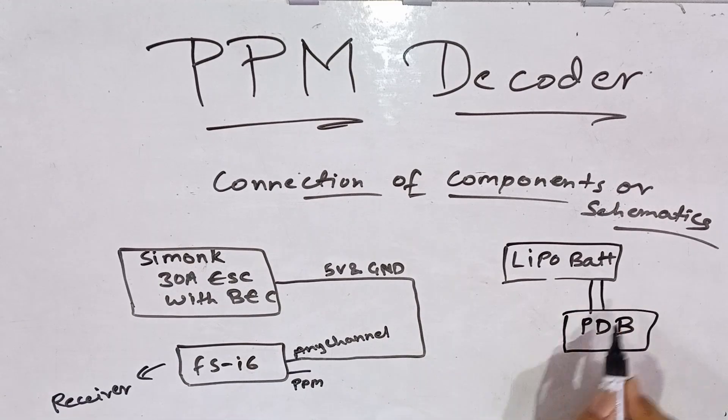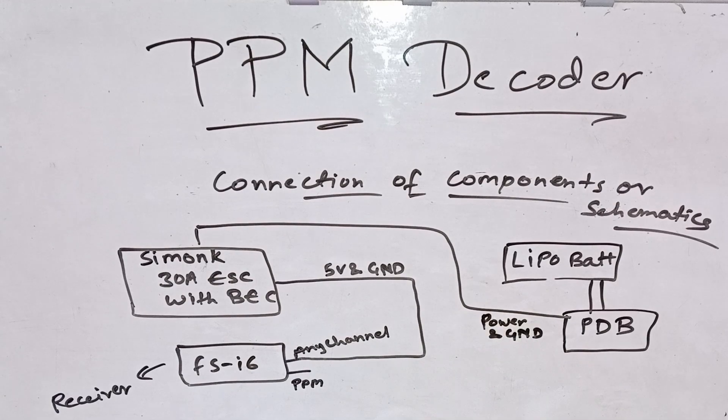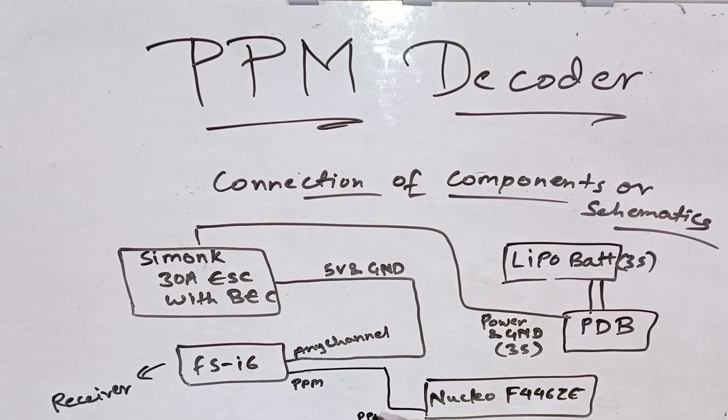The ESC will be powered from this PDB as well. We have our Nucleo F446 ZE. This Nucleo is getting the PPM signal and ground signal from FSi6 receiver. We have our servo motor, so the servo motor is operating with the 5 volts and ground, and our PWM signal is also transmitted from the Nucleo board. Next we have our transmitter which is FlySky FSi6 and it connects with the receiver. The Nucleo is powered through a micro USB as you can already see. So this is the schematic or basic component diagram you can connect as already stated here.